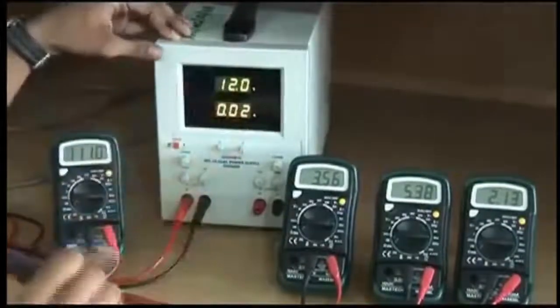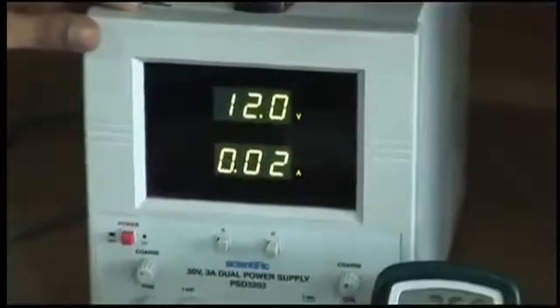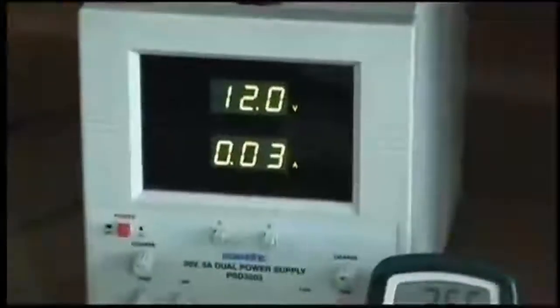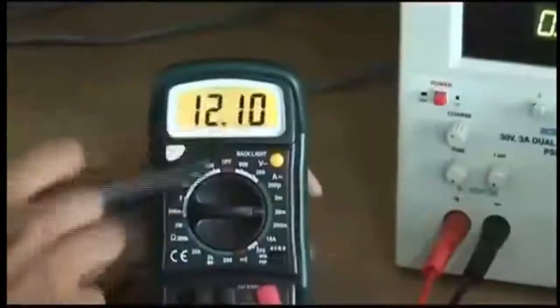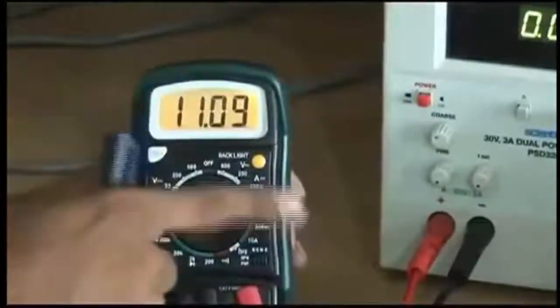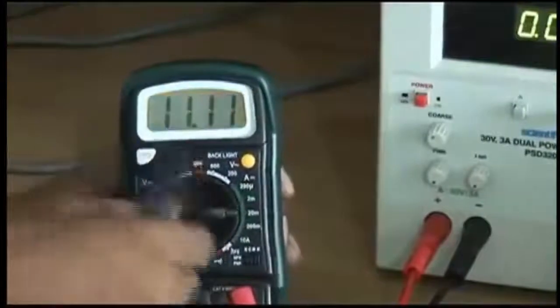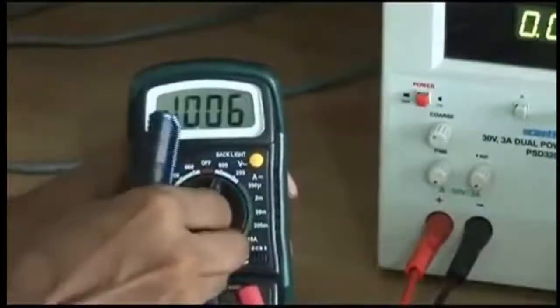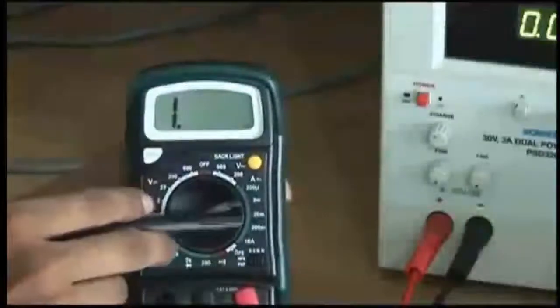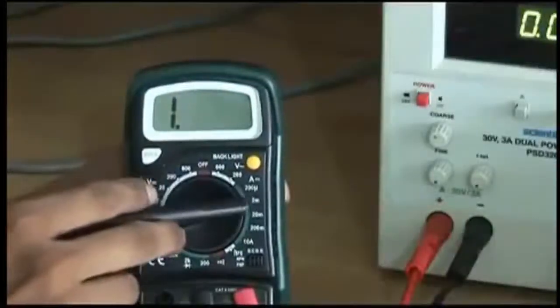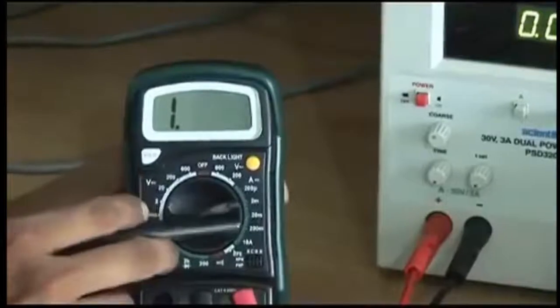When we use this voltage there will be obviously flow of current. Now that flow of current, what is the total flow of current is measured by this ammeter. To measure the current we have to keep this knob from up to this range of 10 ampere. You can see this is ammeter. Here we have this range: 200 micro, 2 milli, 20 milli and 200 milli. I am keeping it at 20 milli.